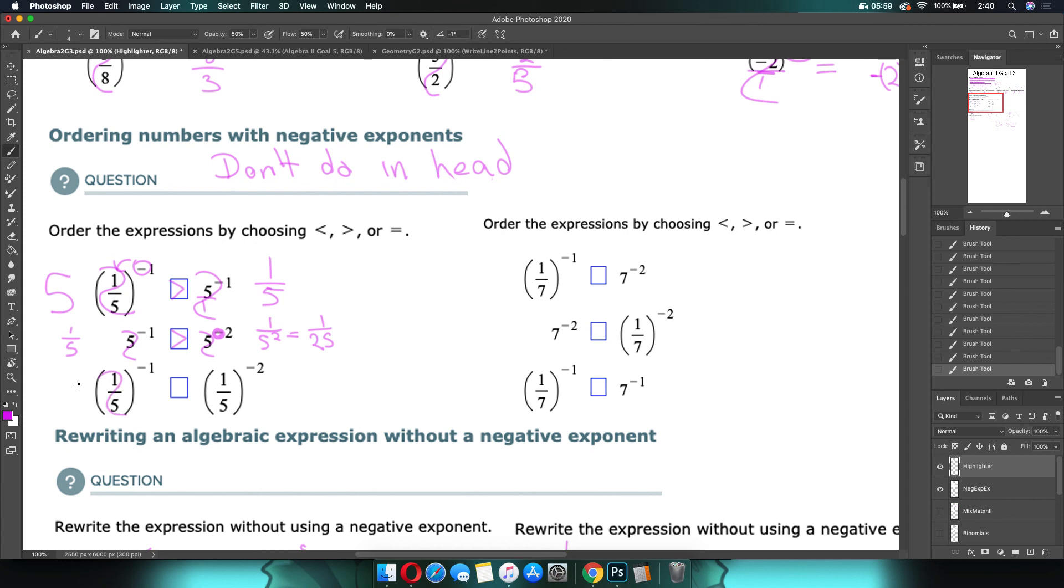Next, we're going to flip this. It becomes 5. Flip this. It becomes 5 squared, which is 25. Which is bigger? 5 or 25? 25.